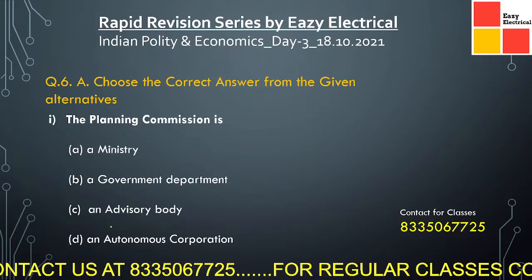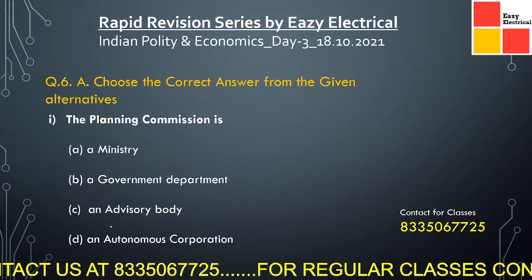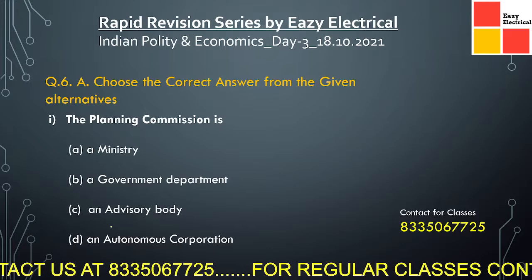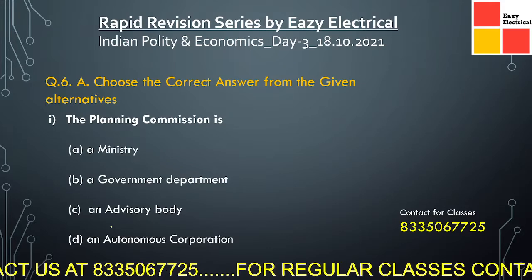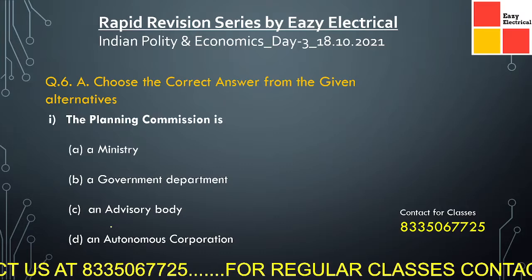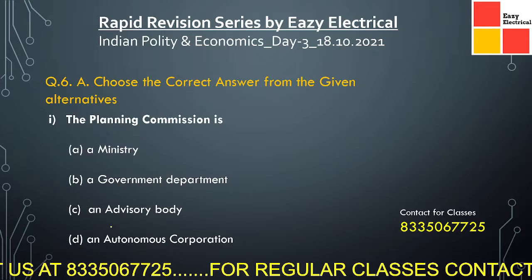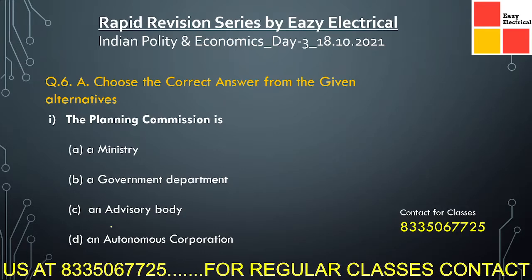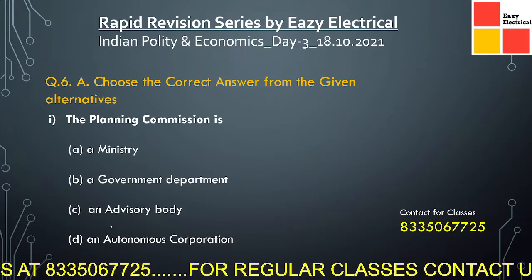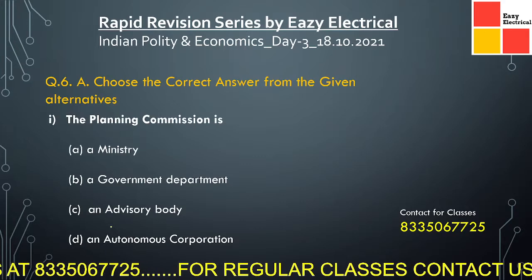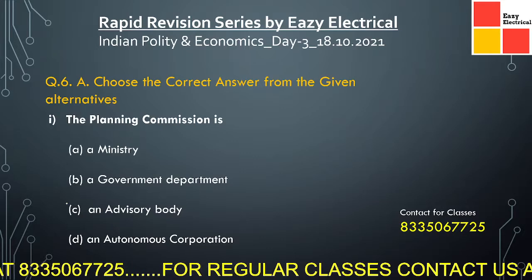The Planning Commission — which type of body is it? The options are: a ministry, a government department, an advisory body, an autonomous corporation. So you must try yourself, then see the solutions. Here the correct answer is an advisory body, option C.